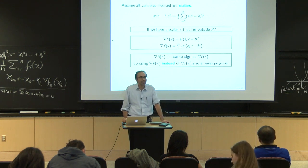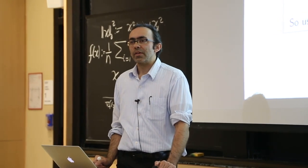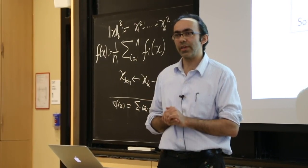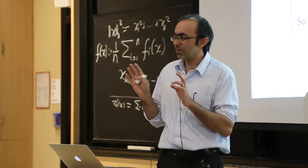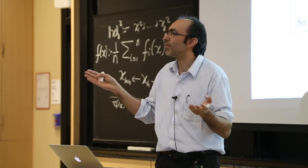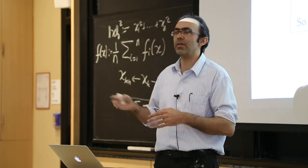If you use that direction to make an update, you will make solid progress. In the time it would have taken you to do one iteration of batch gradient descent, far away you can do millions of stochastic steps. Each step will make some progress. Once you're inside the region of confusion, this behavior breaks down. Some stochastic gradient may have the same sign as the full gradient, some may not.